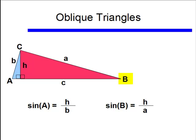Let's move to this triangle. Now I'm looking at angle B, and angle B I can say is equal to the opposite or the height, divided by the hypotenuse or lowercase a. So sine of A is equal to H over B, and sine of B is equal to H over A.